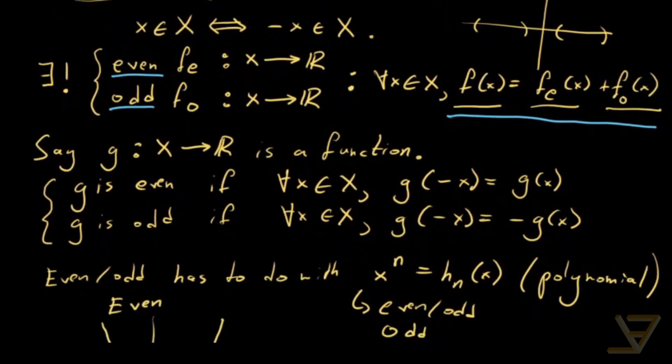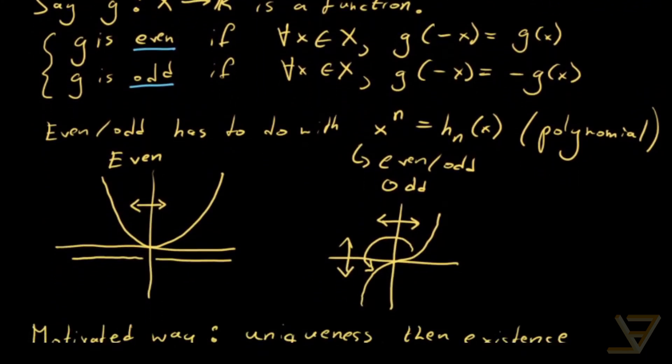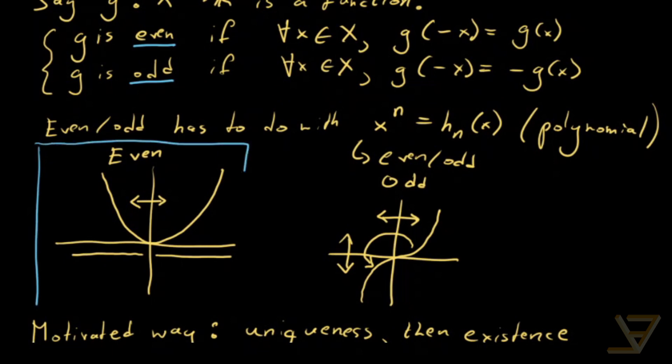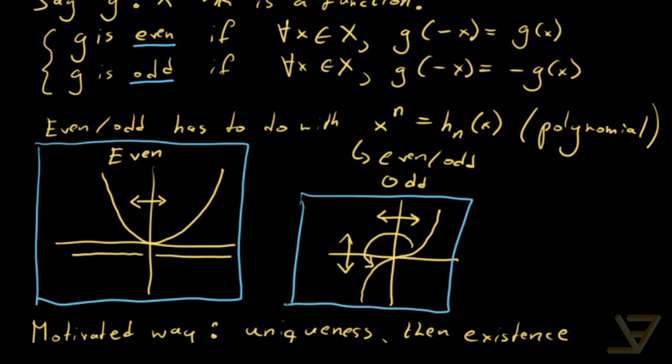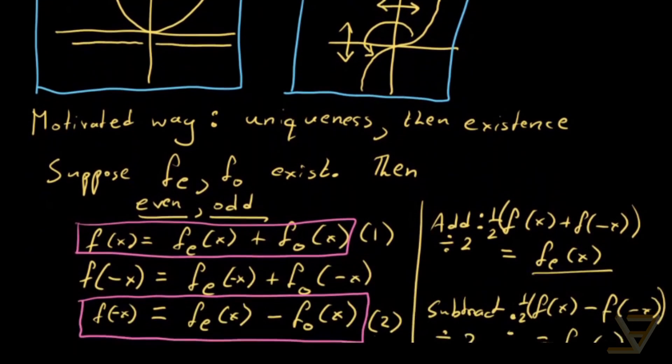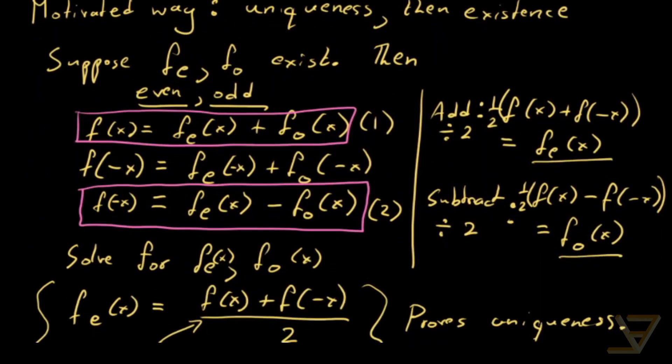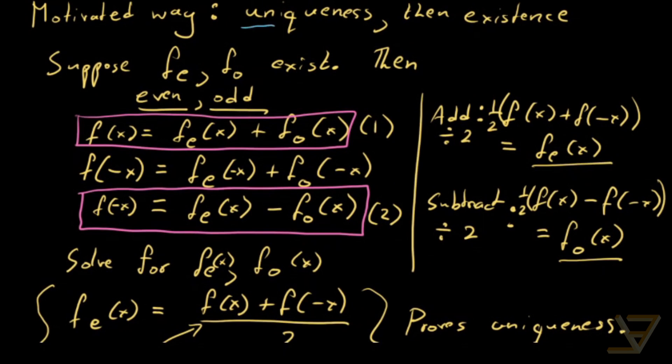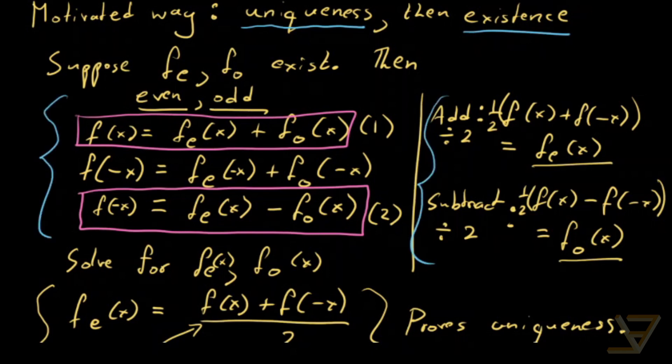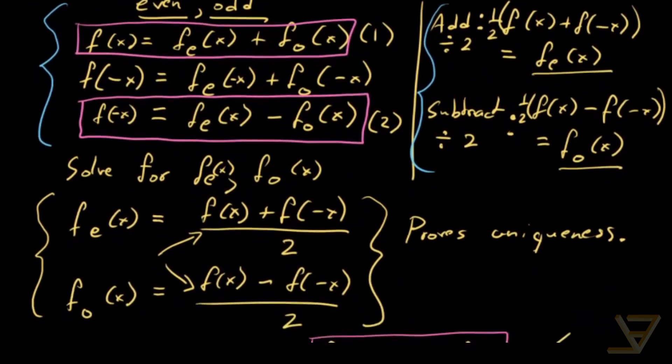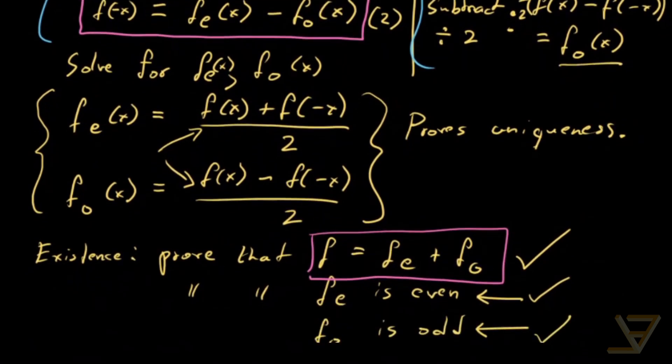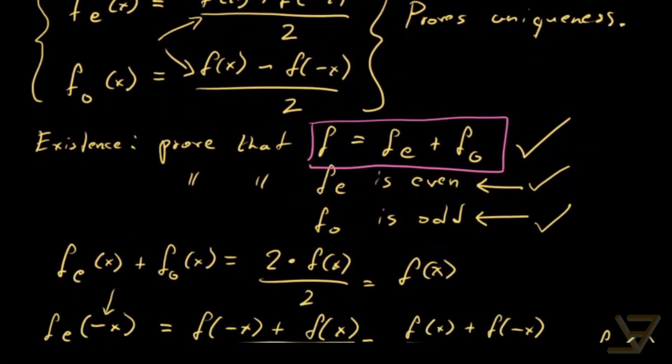Then as a reminder we defined even functions and odd functions and looked at some graphical representations of even and odd functions. Then instead of proving existence followed by uniqueness we thought we could do uniqueness followed by existence which we did by solving a system of equations.